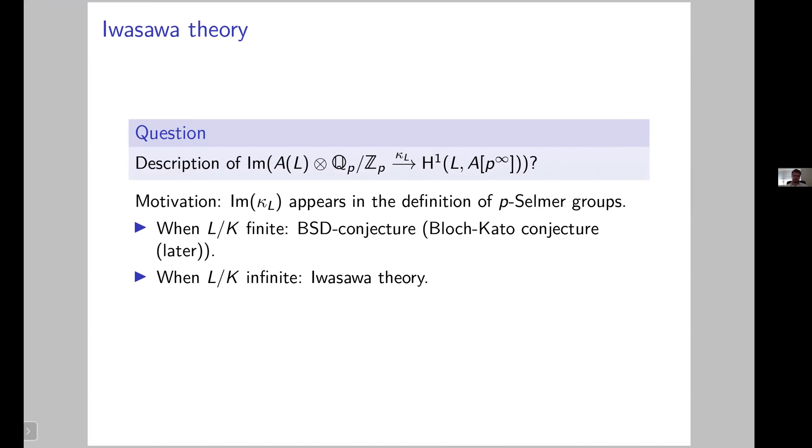When L is K or is a finite extension of K, the study of the Selmer group is related to BSD conjecture and more generally to Bloch-Kato conjecture. When L is an infinite extension of K, this description is also useful for Iwasawa theory. For the same reasons, because this image of Kummer map locally at p appears in the definition of the Selmer group over an infinite extension. In the particular case where the completion for the p-adic topology, which I denote by L hat, is a perfectoid field, a very nice answer to this question was given by Coates and Greenberg in 1996.